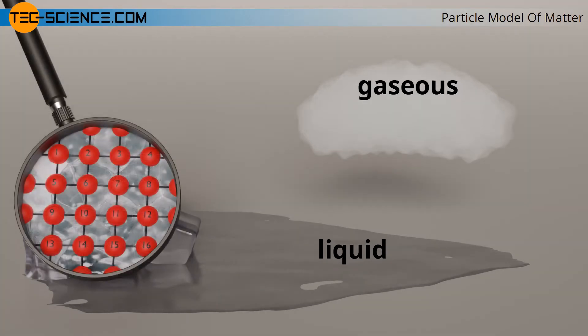In solids, the particles of a substance are bound to a certain location due to the relatively large binding forces. The particles can oscillate more or less strongly depending on the temperature, but in principle they retain their position within the material. If the individual particles were numbered in thought, the numbering would still be the same after some time, since the particles cannot move freely.